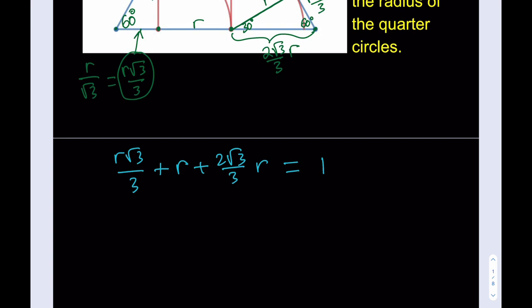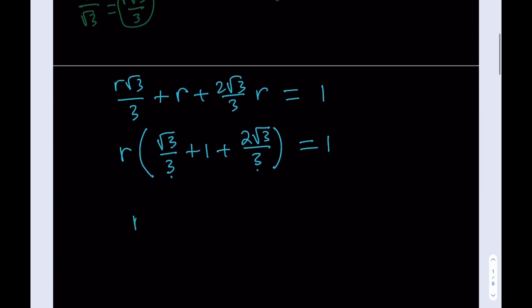Notice that we can actually factor out an R here. Let's do that. If we do, we get root 3 over 3 plus 1 plus 2 root 3 over 3. Now this is going to make the calculations easier because these two already have a common denominator. And if I add them, I get 3 root 3 over 3, which is the same as root 3. So this is going to turn into R times root 3 plus 1 is equal to 1.